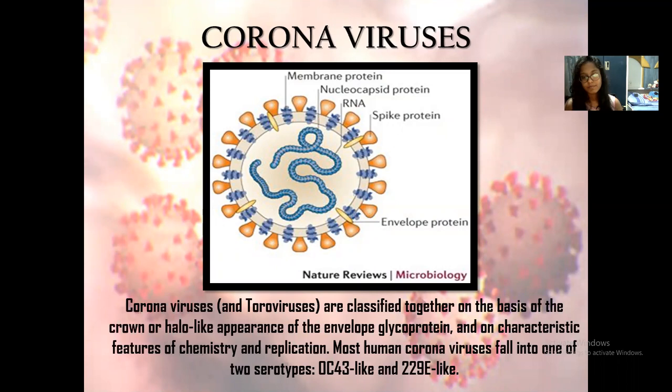Coronaviruses are a large family of viruses that cause upper respiratory tract illnesses. However, three new coronaviruses have emerged from animal reservoirs that are now causing pandemics. Coronaviruses are classified together on the basis of their crown or halo-like appearance of the envelope glycoprotein and characteristic features of chemistry and replication. Sometimes these viruses jump to humans and these are called spillover agents.